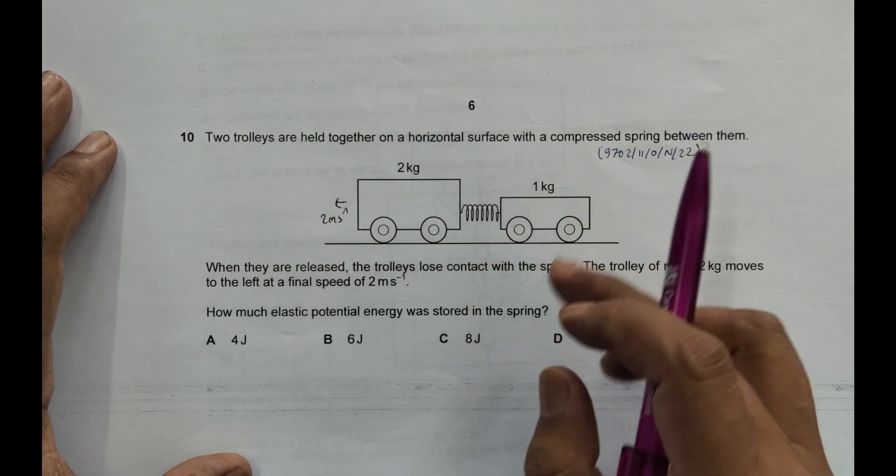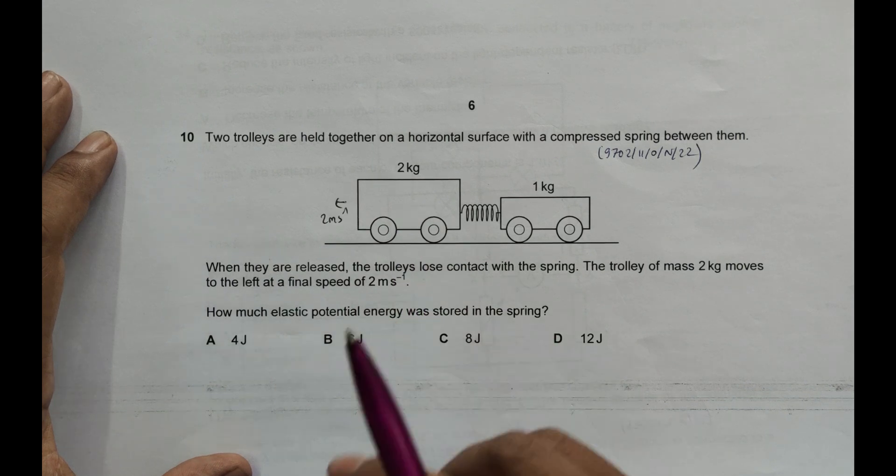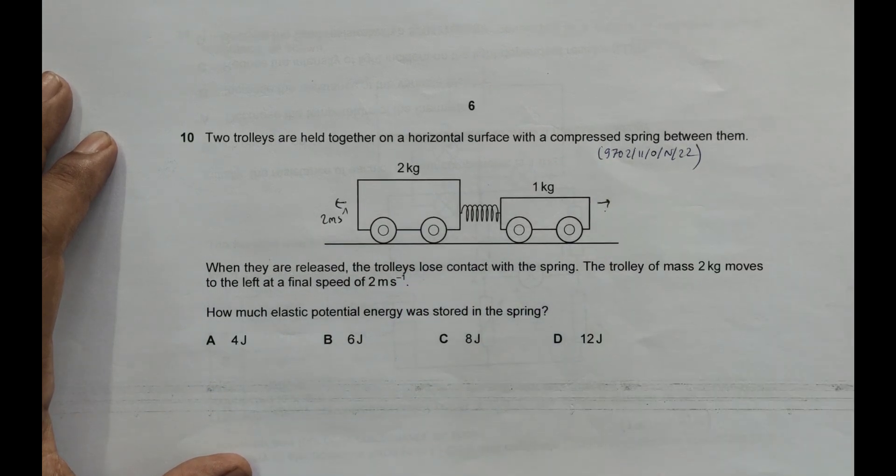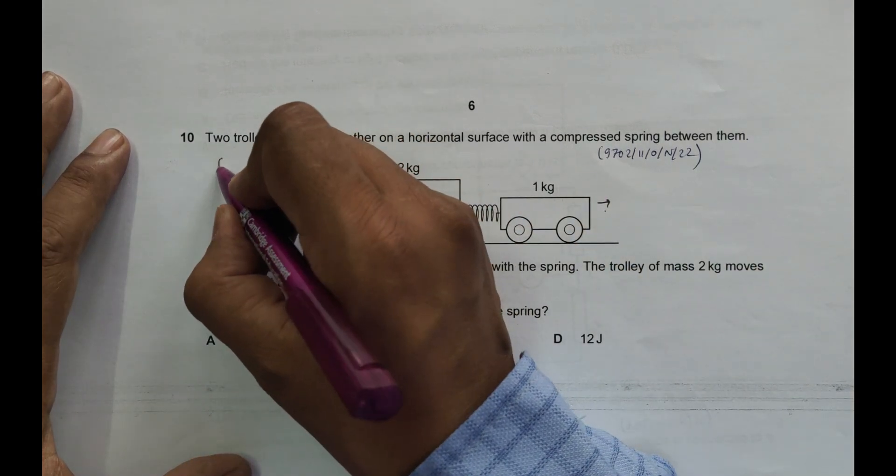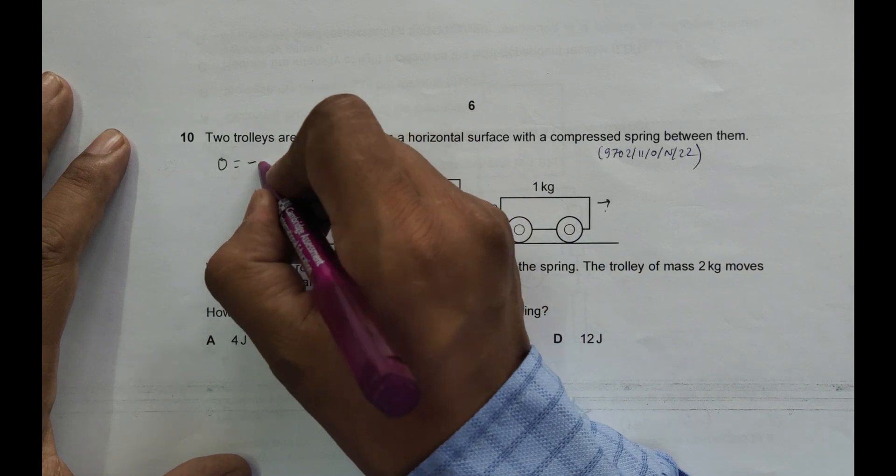For that we need to find the velocity here. Now what happens is initially everything was 0, so total momentum was 0. This equals minus 2 into 2.